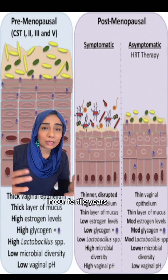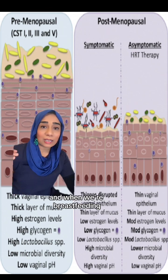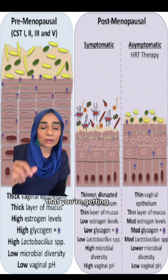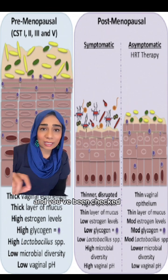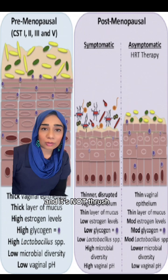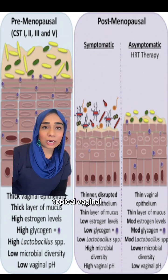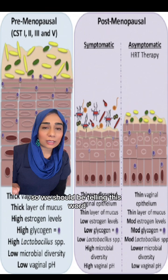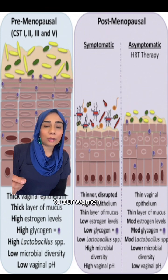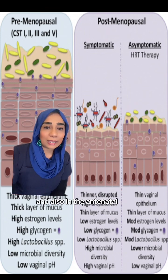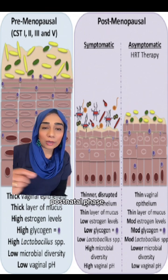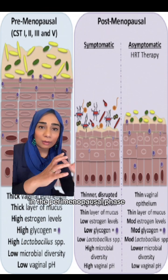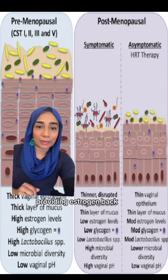We are cyclical beings and we transition through various phases of our life. In our fertile years, when we're breastfeeding, our oestrogen decreases. So that recurrent itch you're getting while breastfeeding — if you've been checked and it's not thrush — we need to give topical vaginal oestrogen back to you. We should be telling this to women who are breastfeeding and also in the antenatal and postnatal phase, and likewise in the perimenopausal phase, providing oestrogen back.